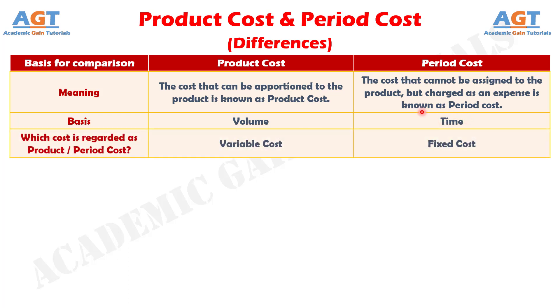Number 3: in general, the variable cost is considered as product cost because they change with the change in the activity level. Conversely, the fixed cost is regarded as period cost because they remain unchanged irrespective of the activity level.